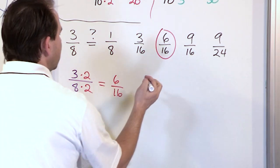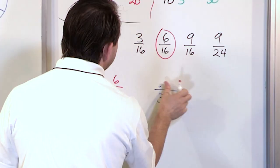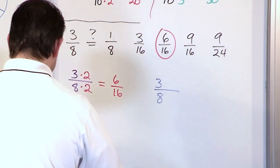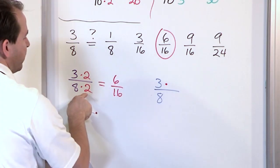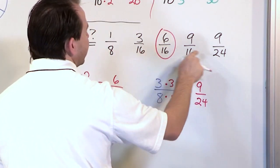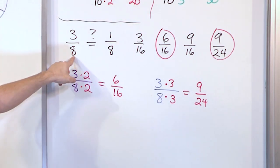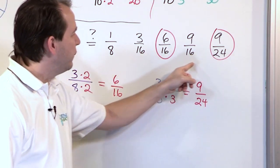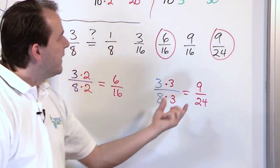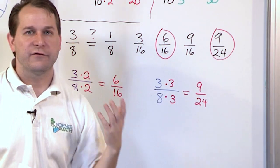Let's see if we have any other matches. We have 3 eighths as our original fraction. Let's multiply it by 3 this time and see what we get. 3 times 3 is 9, and 8 times 3 is 24. We look and see that we have 9 twenty-fourths. Those are going to be the only answers — if I multiply by 4, the bottom would be 32; if I multiply by 5, it'd be 40 — neither is in the list. So 9 twenty-fourths is exactly the same fraction as 6 over 16, which is also exactly the same as 3 eighths.